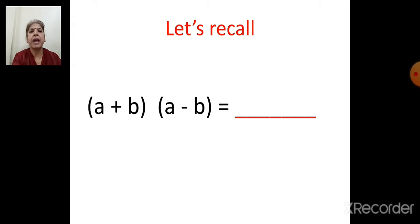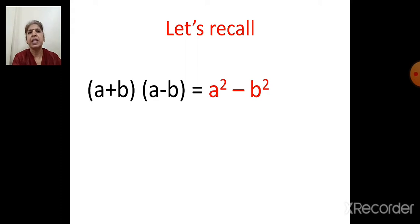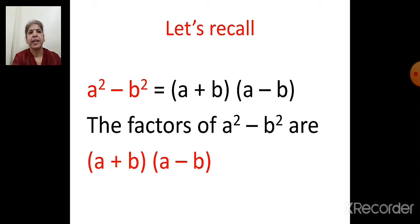A plus B, the whole bracket, multiply by A minus B. What is the answer? It is A square minus B square. A plus B, the whole bracket, multiply by A minus B is equal to A square minus B square. We can also say A square minus B square is equal to A plus B, the whole bracket, multiply by A minus B. So the factors of A square minus B square are A plus B and A minus B.